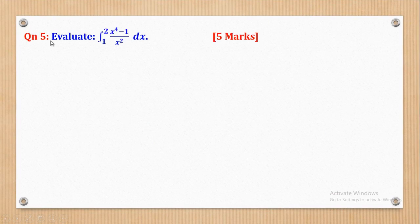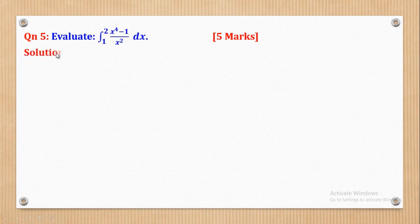We shall start with question 5. Question 5 asks: evaluate the integral of (x⁴ minus 1) all divided by x squared, from 1 to 2 with respect to x. There are 5 marks, so we are going to go through the solution step by step so that we see where the 5 marks come from.